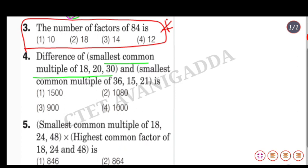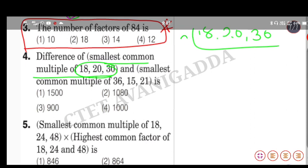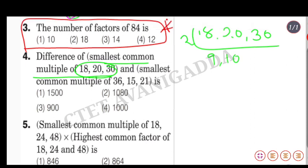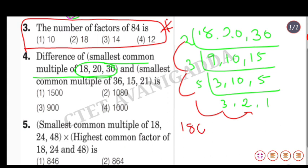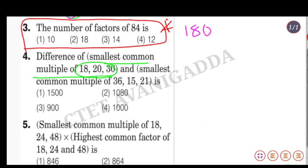We calculate the LCM. Breaking down the numbers: we get factors including 2, 3, 4, 5, and 6. Combining: LCM of 18, 20, 30 gives us values with factors 4, 3, 5 and 6. LCM of 36, 15, 21 gives us factors 3, 3, and 6.